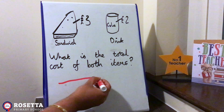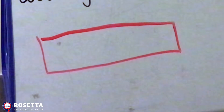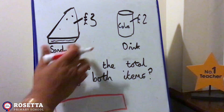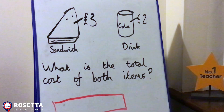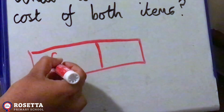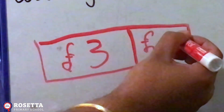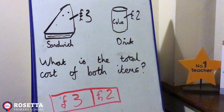For our bar model, we've got a whole bar here. How many parts of this bar should there be? How many items do we have? Now this one's three pounds and this one's two pounds — so which piece of the bar would be bigger, this one or this one? Well done, the three! So if I divide it around there, this part of the bar would be three pounds and this part of the bar would be two pounds.